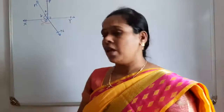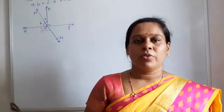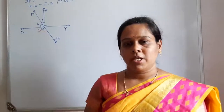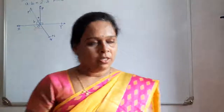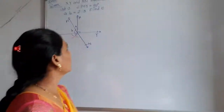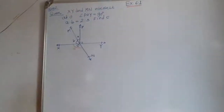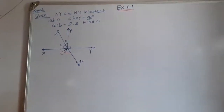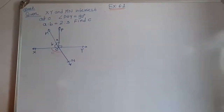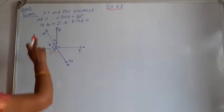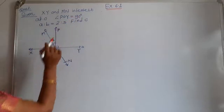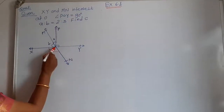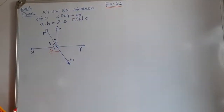Hello friends, now the next question, exercise 6.1, question number 2nd. See the given thing — here the given information is X, Y, M, N intersect at point O.